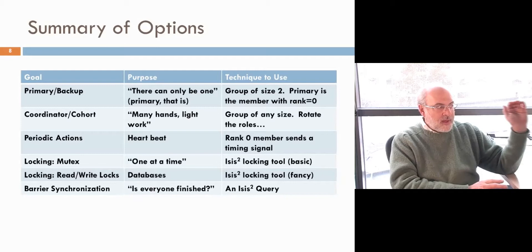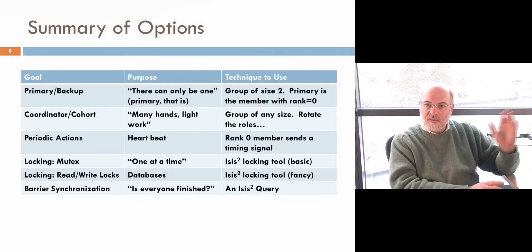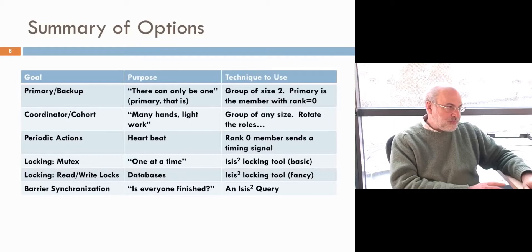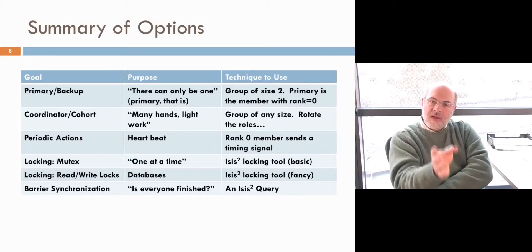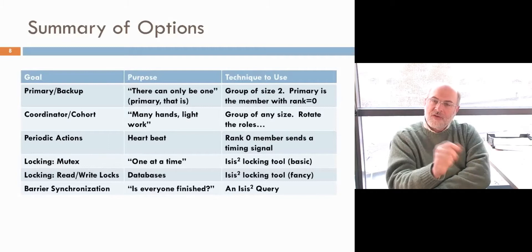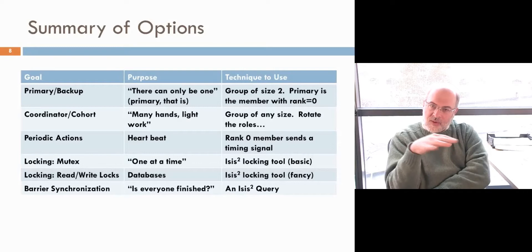Here's a summary of your options: primary backup, coordinator cohort, periodic actions, locking in the mutex form, read-write locking, and barrier synchronization. I've summarized the purpose of each one in this table, with a little bit of detail about the techniques on the right. Fundamentally, these techniques come down to using multicast, although in the case of the locking tool, we've built the multicast layer into an API that just talks about locks. If you read the ISIS manual about that section, you'll see exactly how it was built.